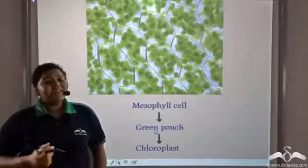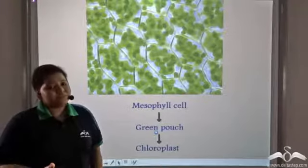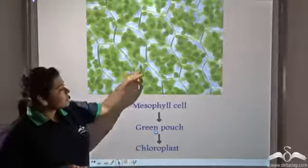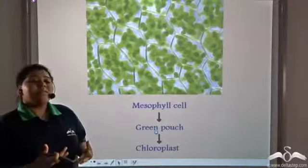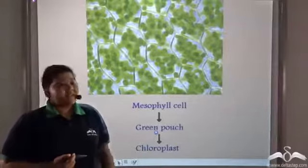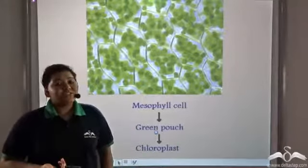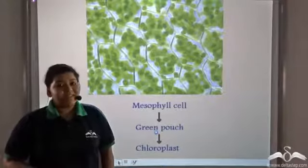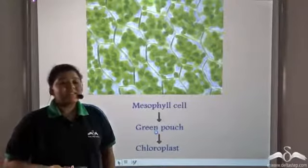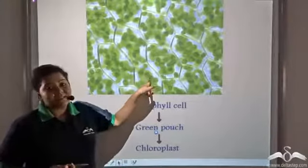Just like a supermarket has many packets of packaged food like chips, similarly these mesophyll cells have pouch-like structures known as chloroplasts. These chloroplasts help in the manufacture of food by photosynthesis, and this is the reason green leaves survive because of these chloroplasts.